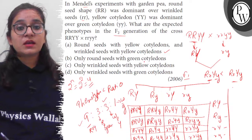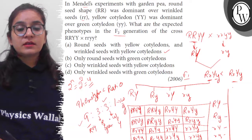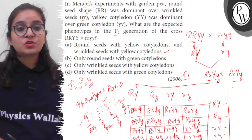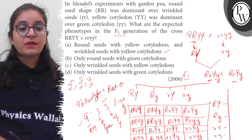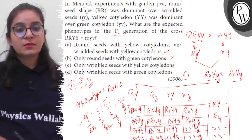B: Only round seeds with green cotyledon. Yes, green and round cotyledon seeds are produced, but they are not only. They also have round yellow, wrinkled yellow, and wrinkled green. So option B is incorrect. Same here in option C.